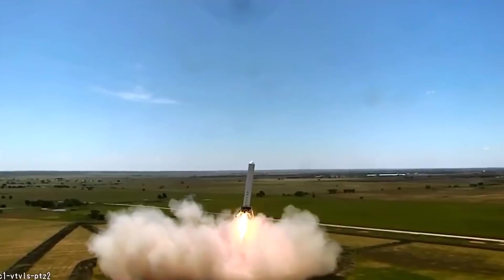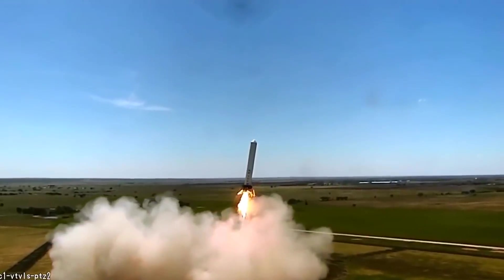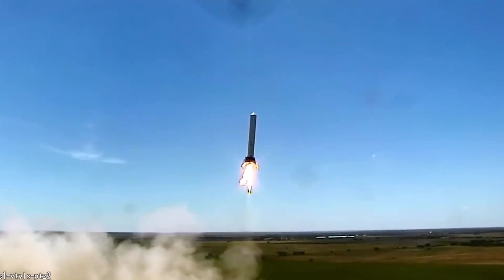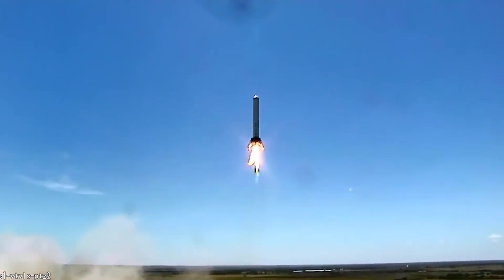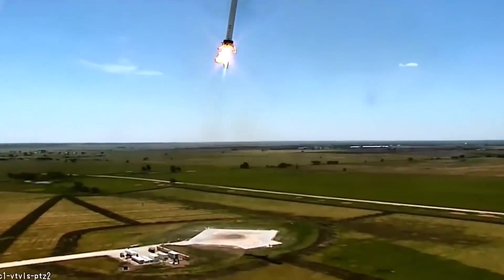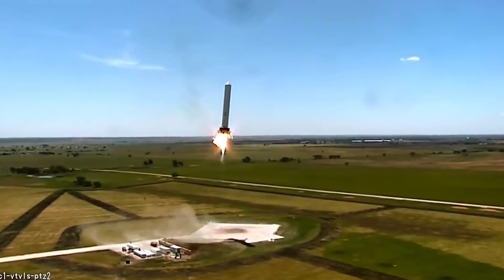Then, another launch would take place just a couple months later on August 13th of 2013, where they went for a lower altitude, but instead did a divert test where the rocket moved 100 meters to the side and then tried to come back down and land in the same spot, using some of the navigational features that they had implemented in the previous launch.